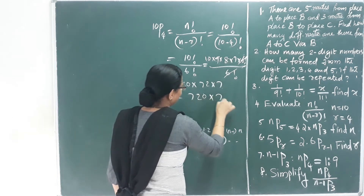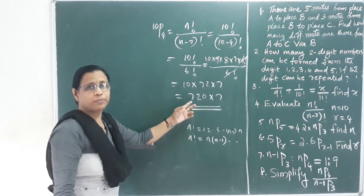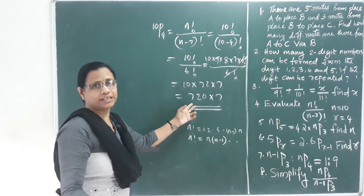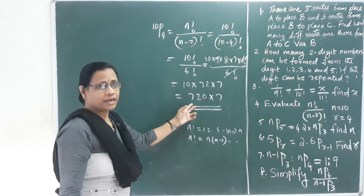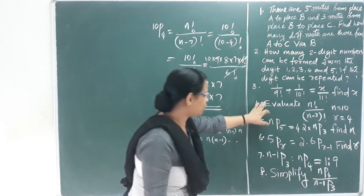So we get 10 × 9 × 8 × 7. If we multiply it, we get the answer. Now let's go to the next question.